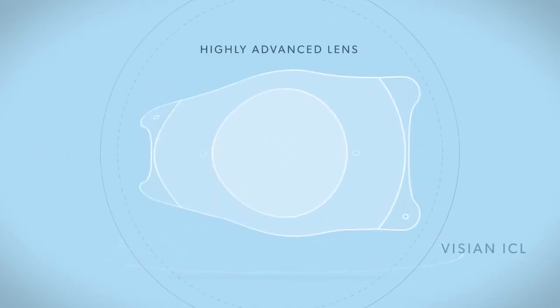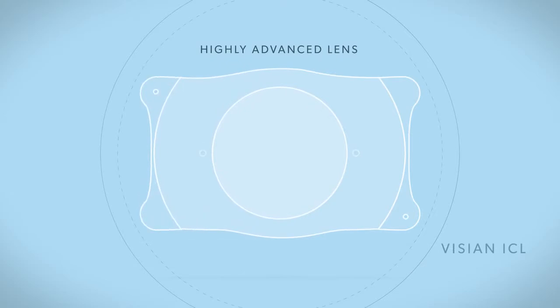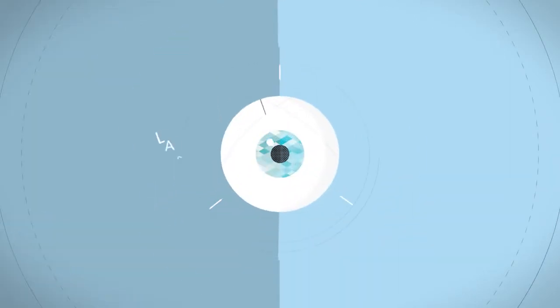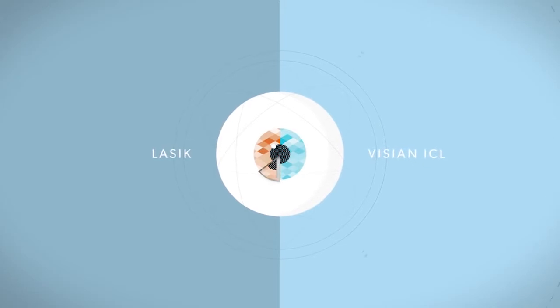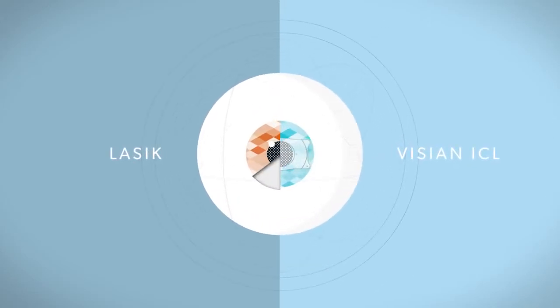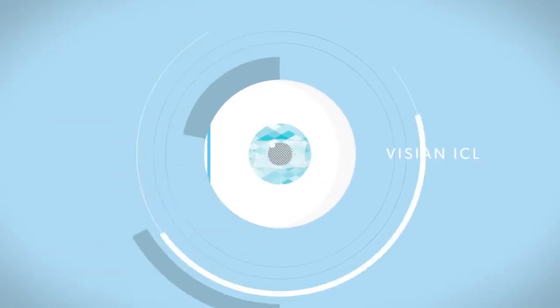The Visian ICL is a highly advanced lens that's gently placed in the eye for maximum comfort and lasting results. And unlike LASIK, which removes eye tissue, the Visian ICL procedure is additive, requiring nothing to be removed.